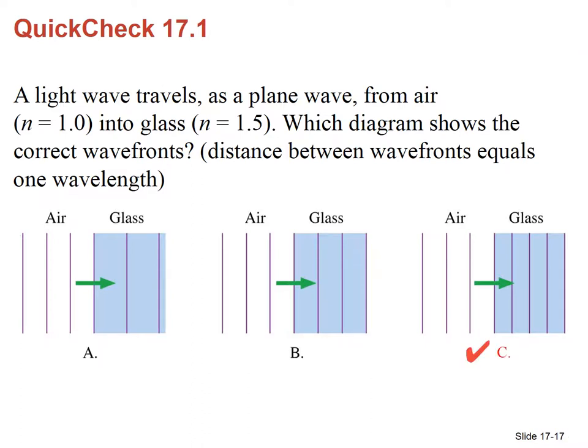The wavelength is inversely proportional to n. Consequently, the larger the n, the smaller the wavelength.